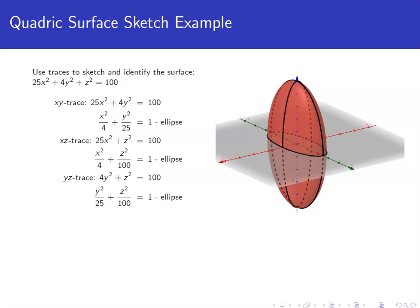In this video, we're going to look at an example of sketching a quadric surface. This one's asking us to use traces to sketch and identify the surface 25x² + 4y² + z² = 100.